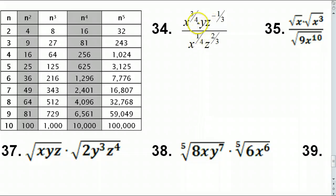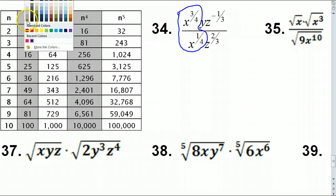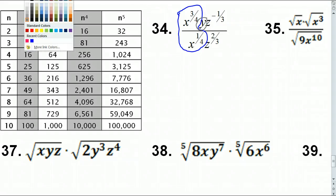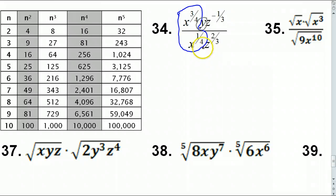Number 34 is in exponent form. I'm going to look at this as three separate little problems: the X's are doing their own thing, the Y is sitting there doing its own thing, and the Z's are doing their own thing.